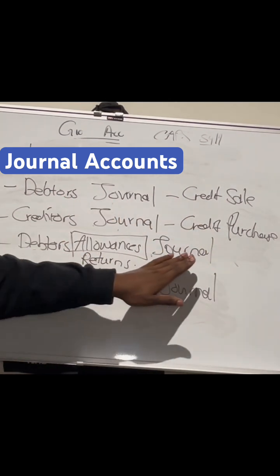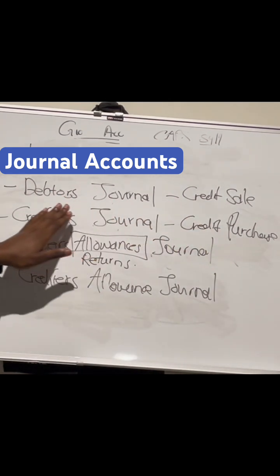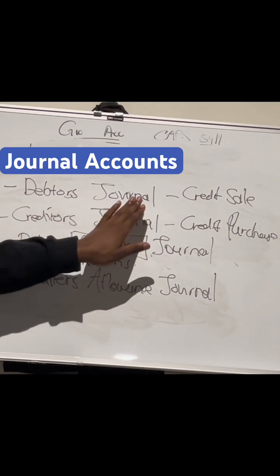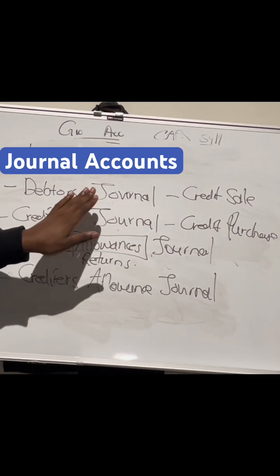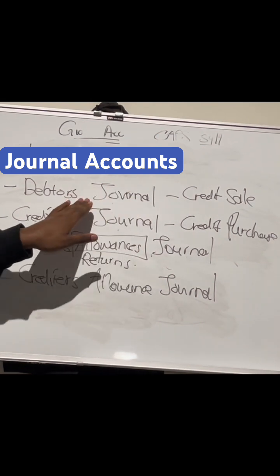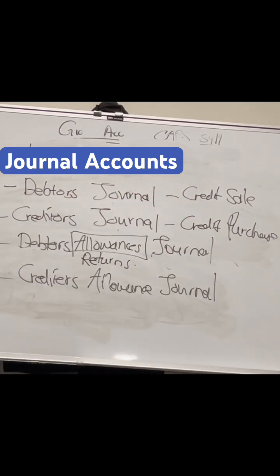A debtor's allowances journal also affects your debtor's journal, because we would have to decrease the liability of your customer.